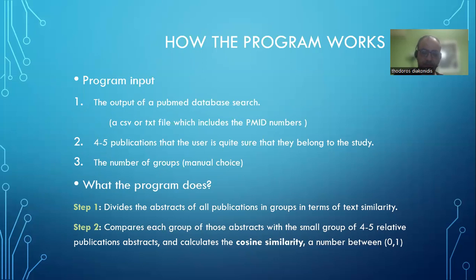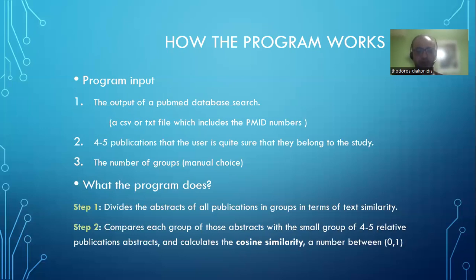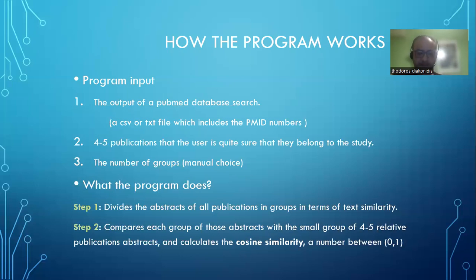I will also provide a video vignette implementing a specific case, so that someone can become more acquainted with the program. The other input consists of four or five publications — specifically the PMID numbers of those publications — that the user is quite sure belong to their study. Additionally, the number of groups that the user would like to divide the total publications into is also an input.